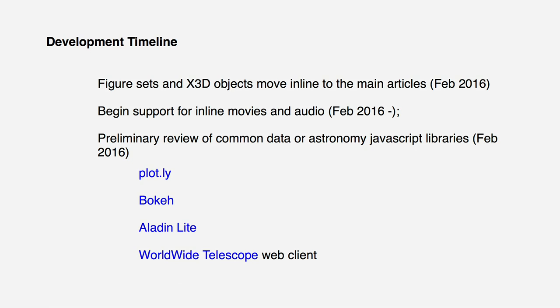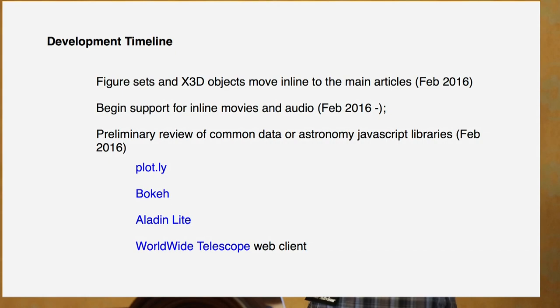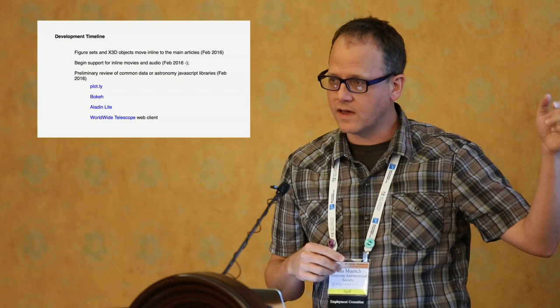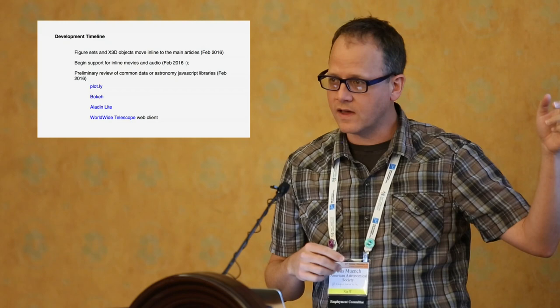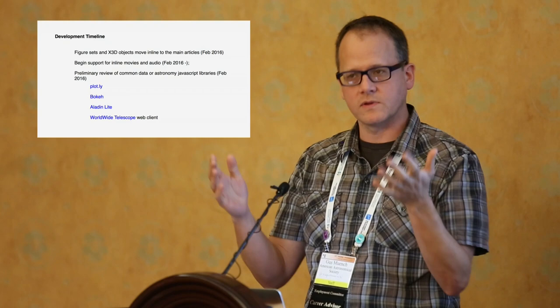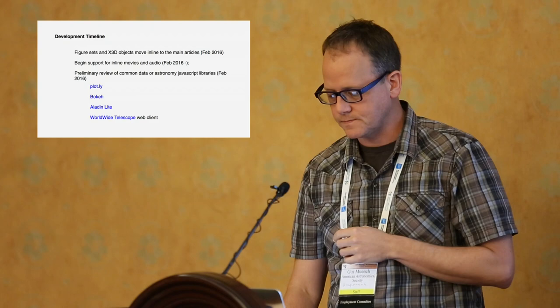So where do we go from here — what is the development timeline? You've been hearing a lot about AAS Journal's futures. We've been investing in R&D to bring these features in line. Figure sets and X3D objects will be centered in the articles in February of this year. We're then going to work on bringing audio and movies in line with the article on roughly the same time scale. We're also doing a proactive review of JavaScript technologies useful to astronomers today — Plotly and Bokeh have Python wrappers so you can write the JavaScript with Python, and Aladin Lite and Worldwide Telescope have their own JavaScript toolkits for creating viewports onto astronomical data. By roughly February, we'll be able to advise authors on how well these would fit within their articles.